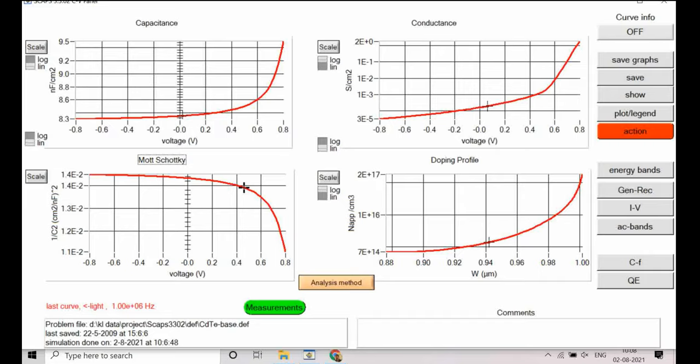And then we have doping profile. How the doping profile varies near to a depletion region. This region is near to depletion region. Because we have taken 1 micron of thickness, you can see from 0.8 to 1 micron. So this is near to the junction. How does carrier density is varying, that is being shown.